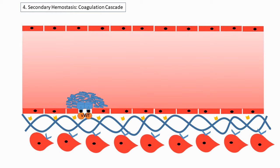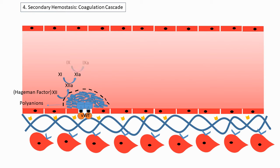The membranes of platelets are made up of phosphatidylserine, which are negatively charged. Factors produced by the liver circulate in the blood. Factor 12 passes by the platelet plug and, upon contact with the negatively charged surface, gets activated. Activated factor 12 then activates factor 11. Activated factor 11 converts factor 9 into its active form. Factor 8 then combines with activated factor 9, and together they activate factor 10.